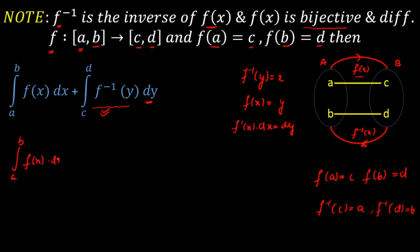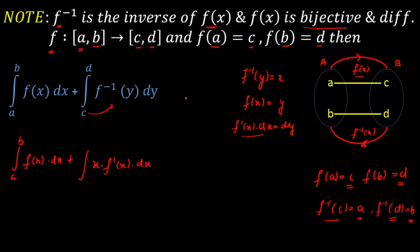Keeping the first integral intact — the integral from a to b of f(x) dx — and substituting into the second integral: f⁻¹(y) becomes x, and dy becomes f'(x) · dx. Now for the limits: when y = c, x = f⁻¹(c) = a, so the lower limit is a. When y = d, x = f⁻¹(d) = b, so the upper limit is b.